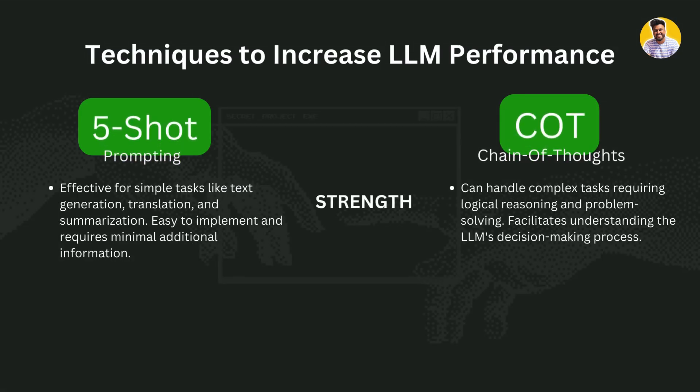The strength of 5-shot prompting is that it is effective for simple tasks like text generation, translation, and summarization. It is easy to implement and requires minimal additional information. The strength of chain of thought prompting is that it can handle complex tasks requiring logical reasoning and problem solving, and it also facilitates understanding the large language model's decision-making process.